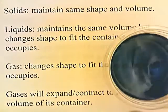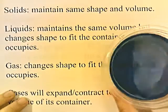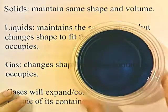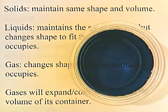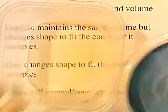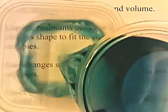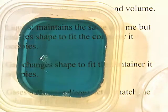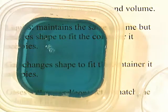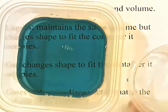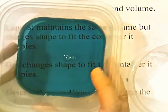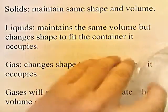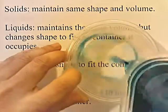a liquid in a round-shaped container. If I transfer it to a square-shaped container, it takes more of a square shape, but the amount of space that the liquid takes up doesn't change — so the volume remains the same but the shape changes.